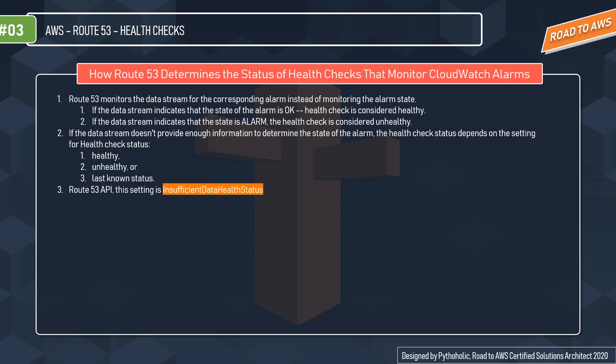The third type is how Route 53 determines the status of health checks that monitor a CloudWatch alarm. You can create CloudWatch alarms that monitor CloudWatch metrics — such as the number of throttled read events for a DynamoDB database or the number of Elastic Load Balancing hosts considered healthy. After creating an alarm, you can create a Route 53 health check that monitors the same data stream that CloudWatch monitors for that alarm.